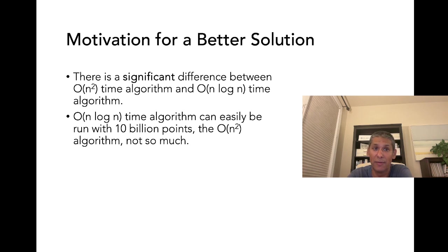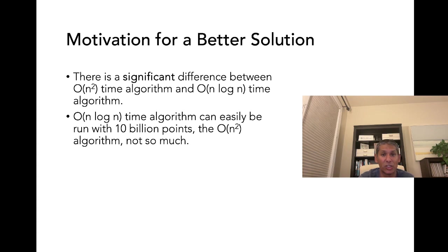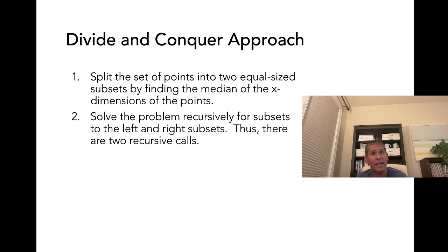There is a big difference between an O(n²) time algorithm and an O(n log n) time algorithm. With an O(n log n) algorithm you can easily run with 10 billion points. With an O(n²) algorithm, even with 10 million or 100 million points the difference is already very large — n² will take many minutes to run, while n log n you wouldn't really observe the delay as a human.